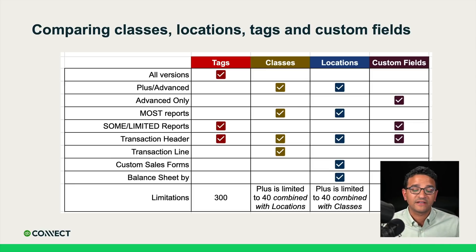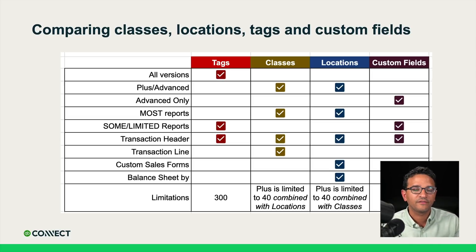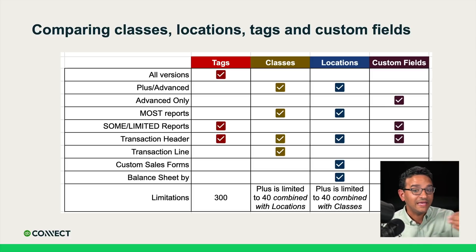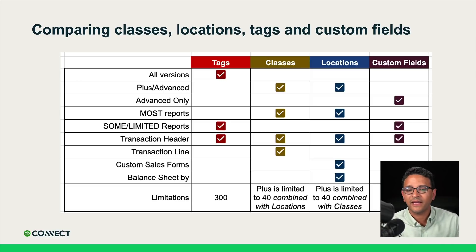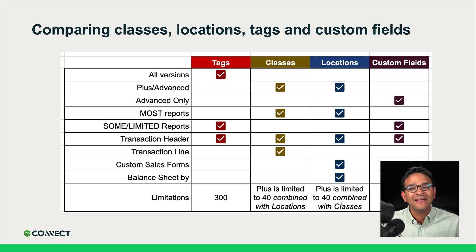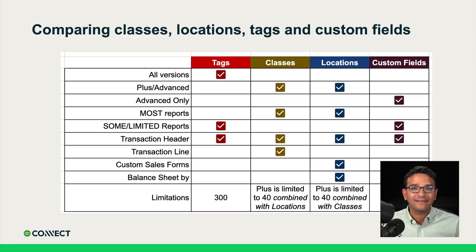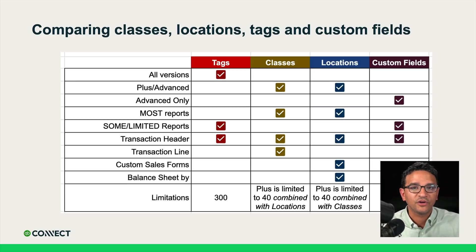Here's a quick cheat sheet: tags are available only in some limited reports, where classes and locations are available in most reports. Classes are available at the line item level, while tags and locations are only at the header level — though classes can be set to either header or line item. Locations are available in the balance sheet by location and allow custom sales forms by location. Custom fields, available only in QuickBooks Online Advanced, are also important to include in the comparison — you get 48 custom fields and can choose which transaction types they appear in.